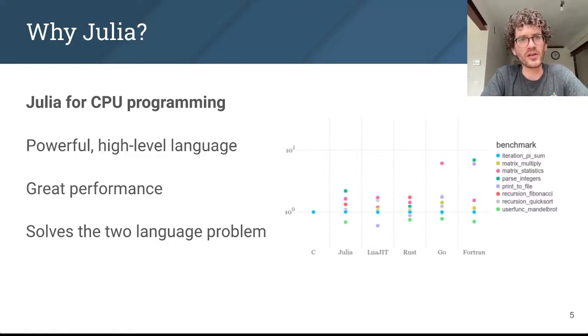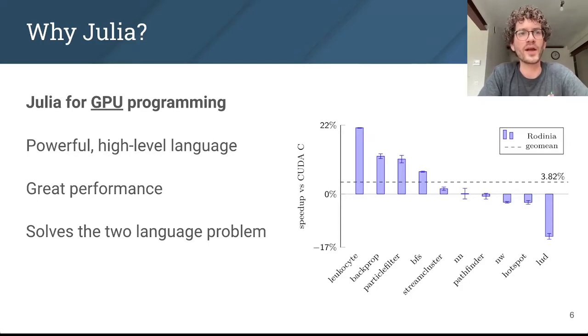This makes it possible to write code that has to perform well in the same language where you've written your application, without having to drop down to a lower-level high-performance language like C, C++, or Fortran. What we've done with CUDA.jl and the other GPU backends is to extend this functionality to GPU programming. Here's a small benchmark comparing the Rodinia benchmark suite ported to Julia versus the original C versions compiled with NVCC, which is Nvidia's C compiler.